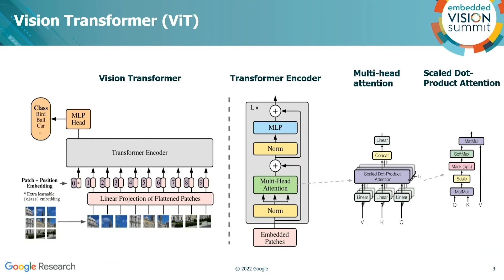The transformer architecture was originally developed in natural language processing to understand sequences like language and speech. The Vision Transformer paper, published about three years ago, found that such an architecture also works really well if we treat image patches as a sequence of inputs to the network. The ViT paper mostly resembles the original transformer design used for natural language, containing a stack of multi-head self-attention layers.